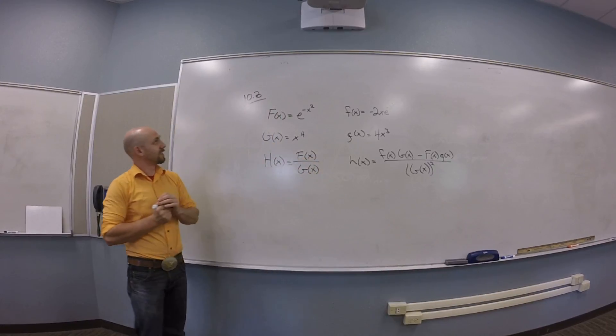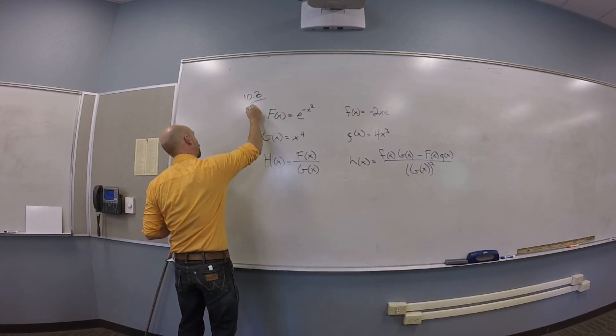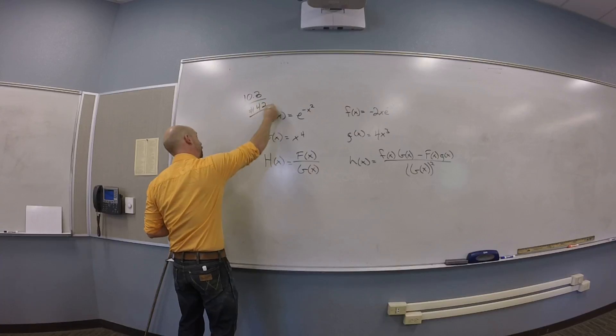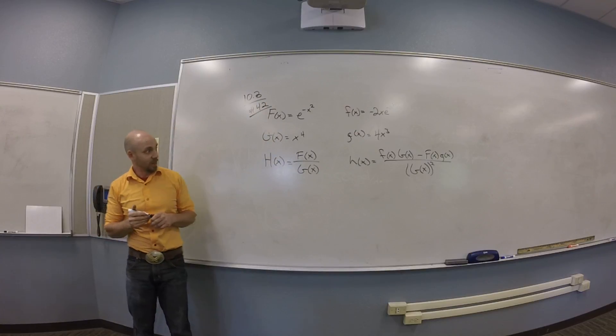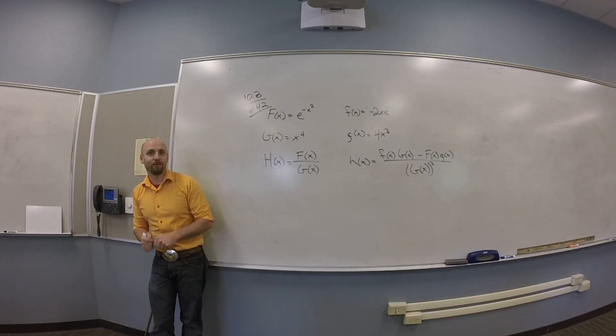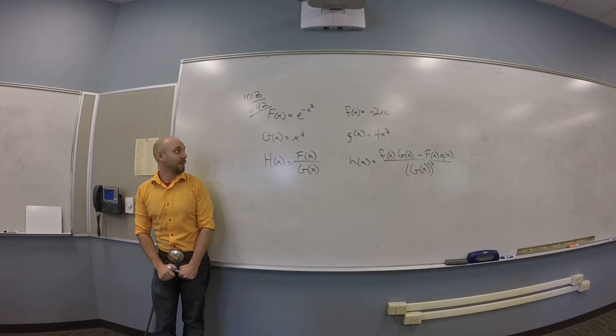Okay, so I would like to do 10.3 number 42. In 10.3 number 42, they tell me that capital F of X is e to the minus X squared and little f of X is minus 2X e to the minus X squared.